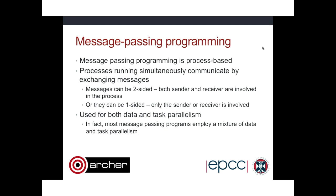Message passing can be used for both data and task parallelism. Data parallelism is where you have a long array and each parallel process operates on a different part — you're acting in parallel on a particular data structure. Task parallelism is where each parallel process is doing a slightly different task. For example, in GROMACS, which does molecular dynamics simulations of biomolecules, some tasks evaluate electrostatic forces using the Ewald sum method while other processes perform pairwise force sums. Most message passing programs employ a mixture of both data and task parallelism.